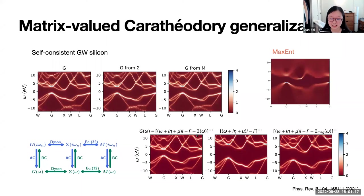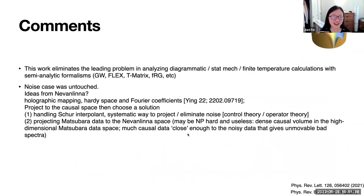We also have self-consistent GW data for 26-orbital silicon, performed by Tianan. We first analytically continue the Green's function, self-energy, and cumulant to the real axis, then apply the Dyson equation on the real axis, inverting matrices from self-energy and cumulant back to the Green's function for comparison — and they are almost exactly the same, confirming very high interpolation precision. Neglecting the off-diagonal parts of the self-energy leads to incorrect band gaps and distorted band structure, showing the importance of the full matrix-valued continuation.